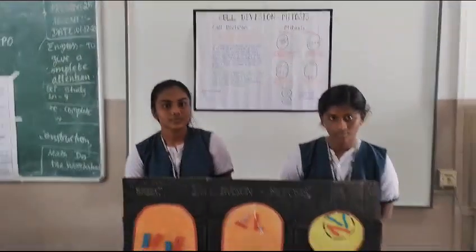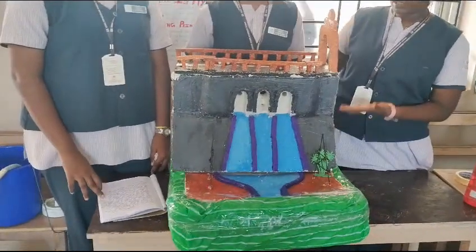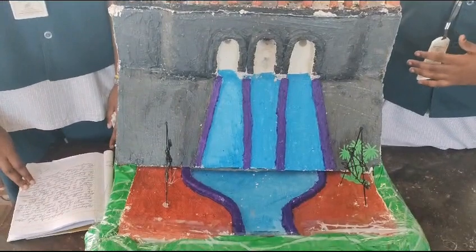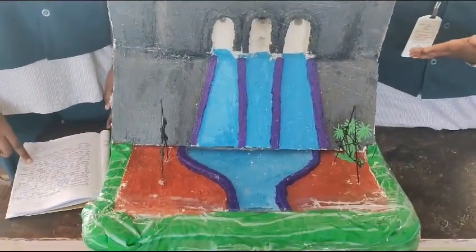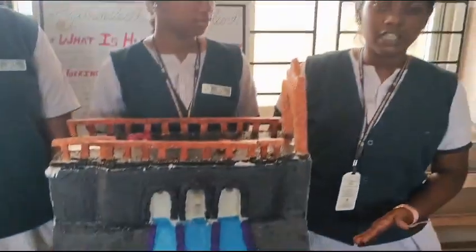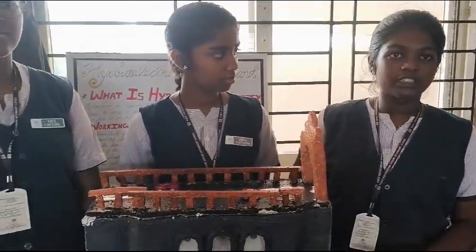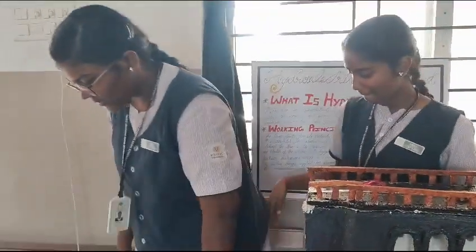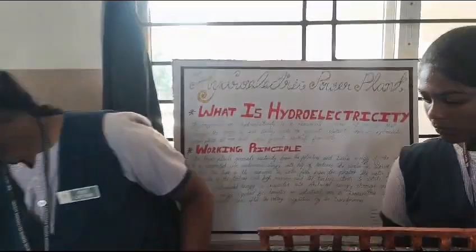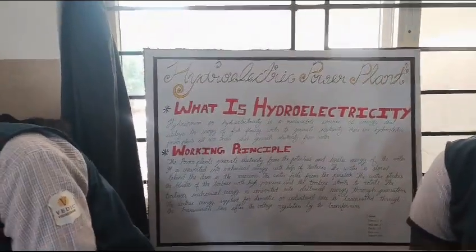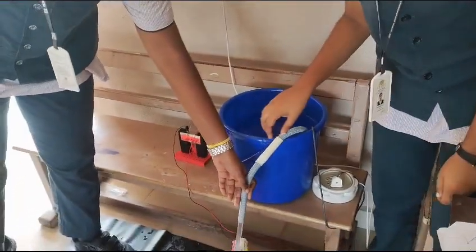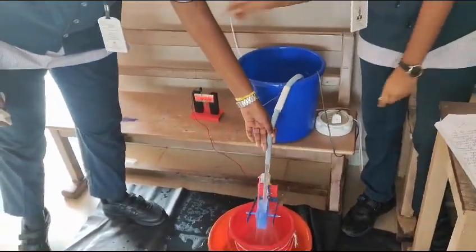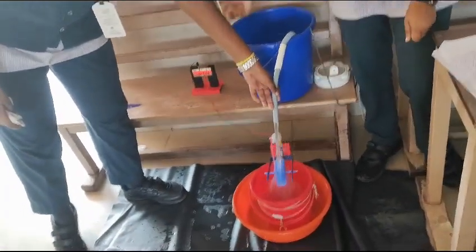This is the hydroelectricity explanation. The water flows through a channel and falls into the turbine, which converts the water's energy into mechanical energy, then into electrical energy. The electricity is used all across India. When the gates rotate, they convert this mechanical energy into electricity.